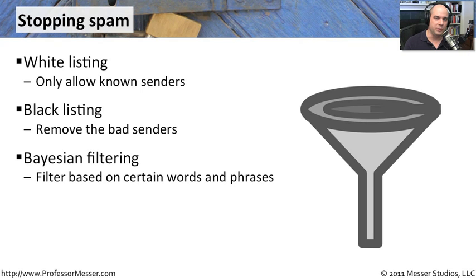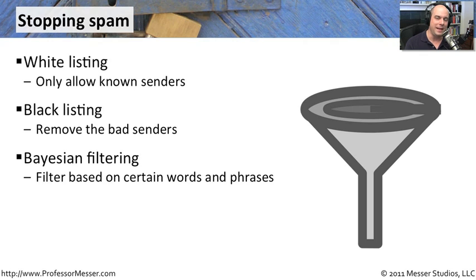A smarter approach to resolving the spam issue is something called Bayesian filtering. This is where we're not looking at a whitelist or a blacklist, and we're not looking for specific words in an email. What we're doing is looking at the entire email — looking at words and phrases — and if we see a number of words and phrases together at certain places within the email, you get a particular score. If that score is above or below a certain threshold, it either goes into your spam box or your inbox. Certainly not perfect, but Bayesian filtering may be a good way to block the majority of bad stuff coming in.